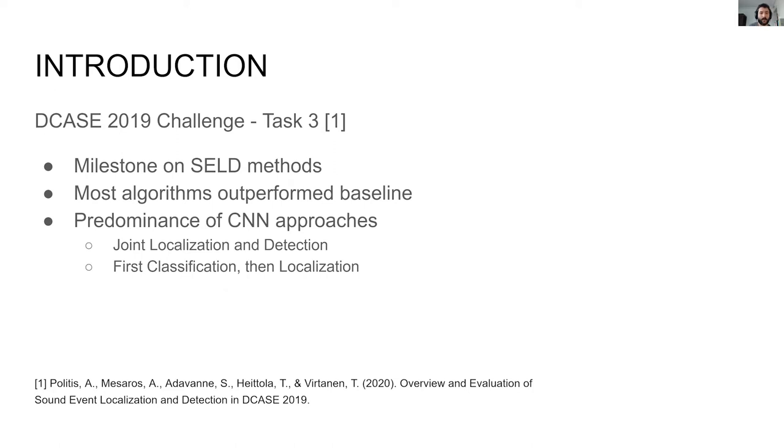Among all these methods there is a clear predominance of convolutional neural networks which mainly approach the problem either in a first classification then localization approach or by means of joint or ensemble methods.